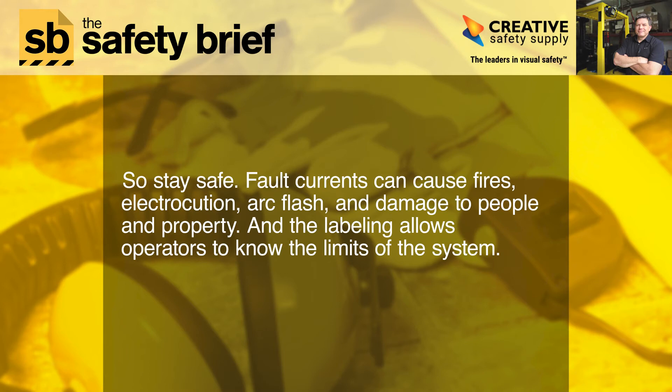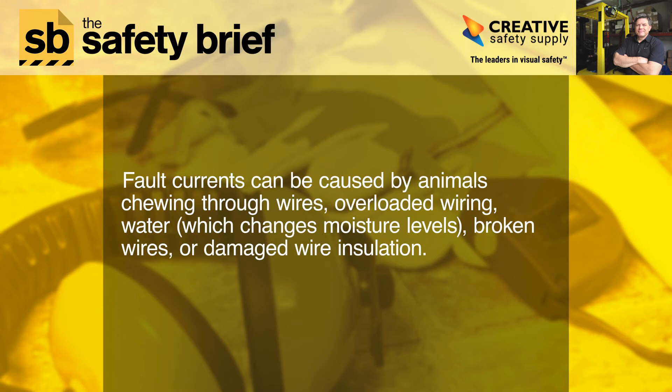So, stay safe. Fault currents can cause fires, electrocution, arc flash, and damage to people and property. The labeling allows operators to know the limits of the system. Fault currents can be caused by animals chewing through wires, overloaded wiring, water which changes moisture levels, broken wires, or damaged wire insulation.